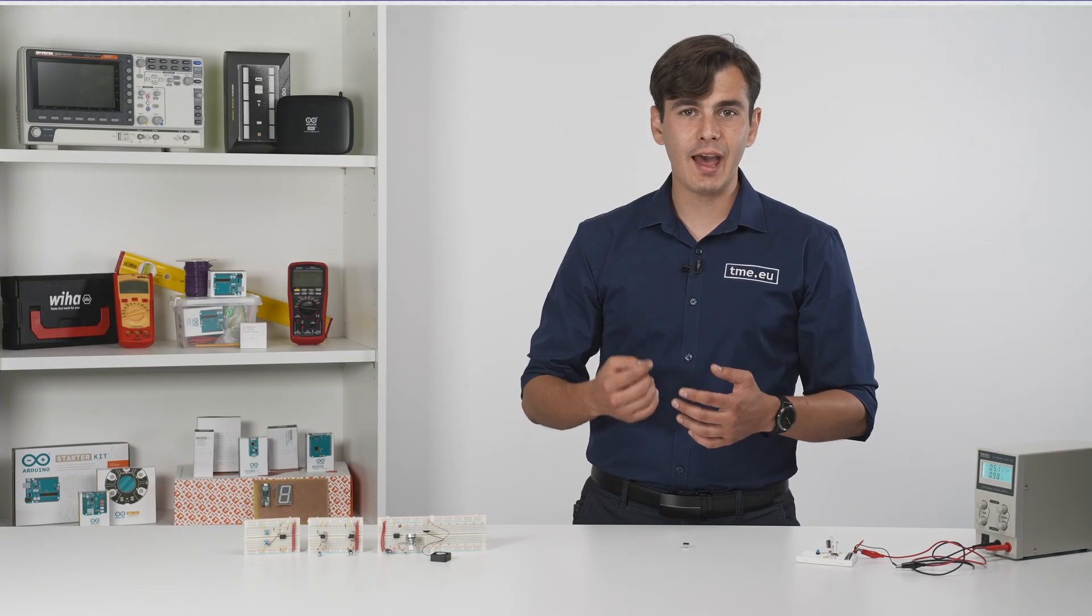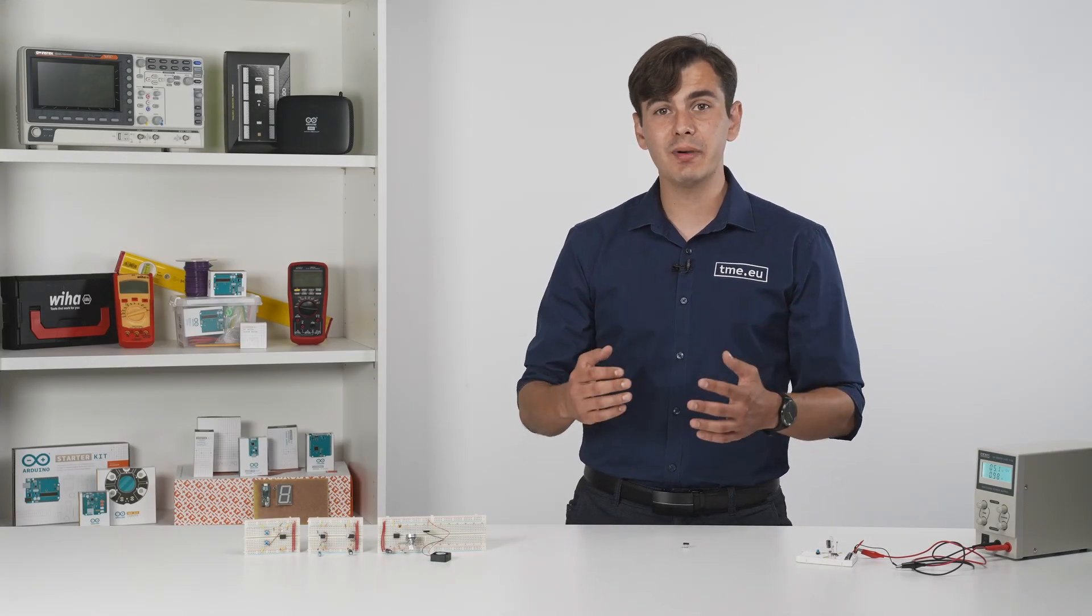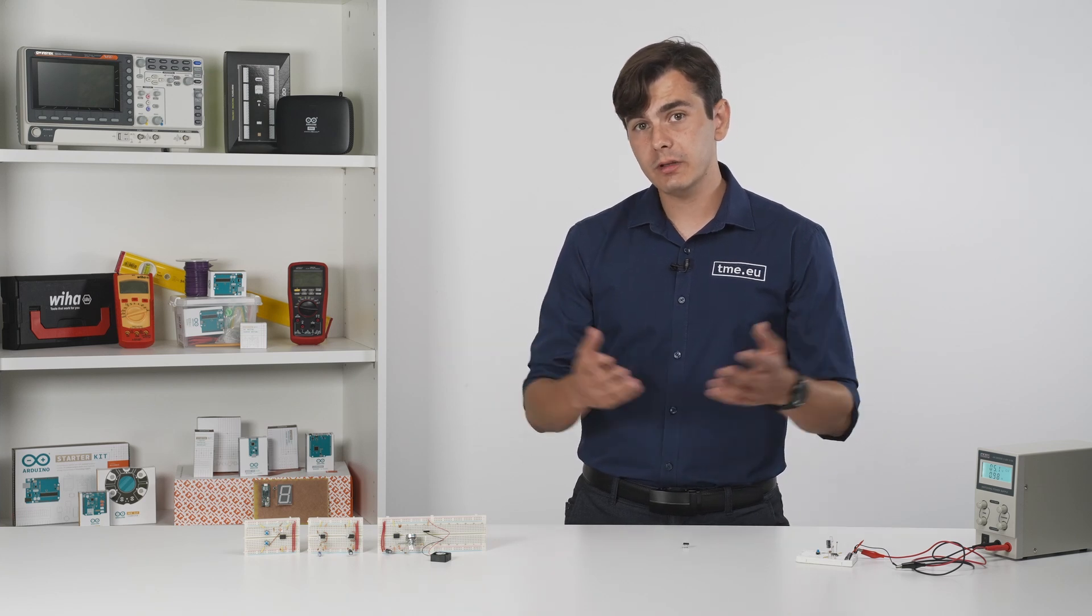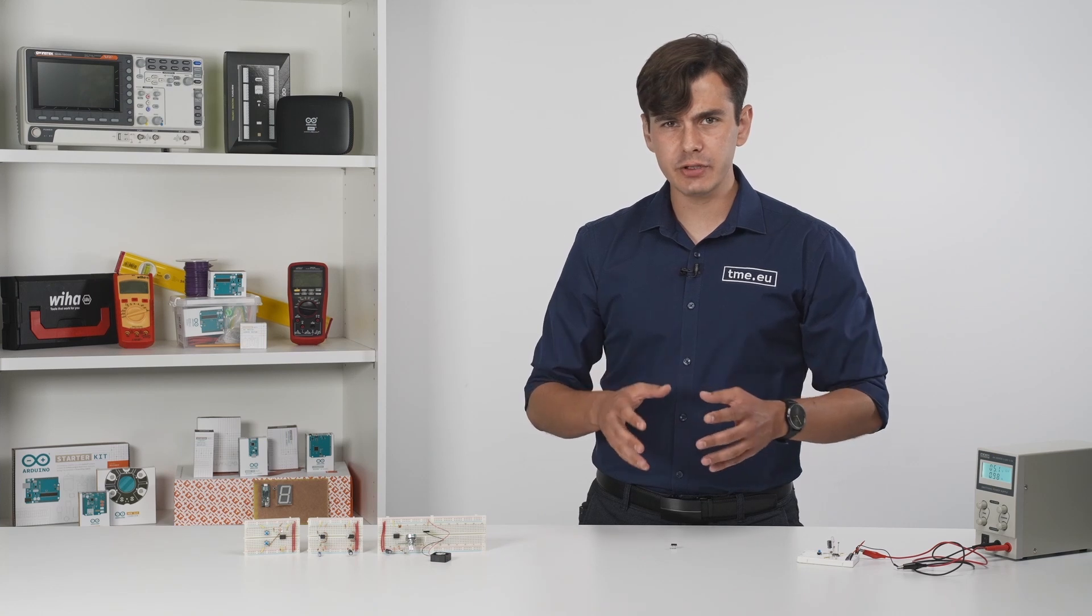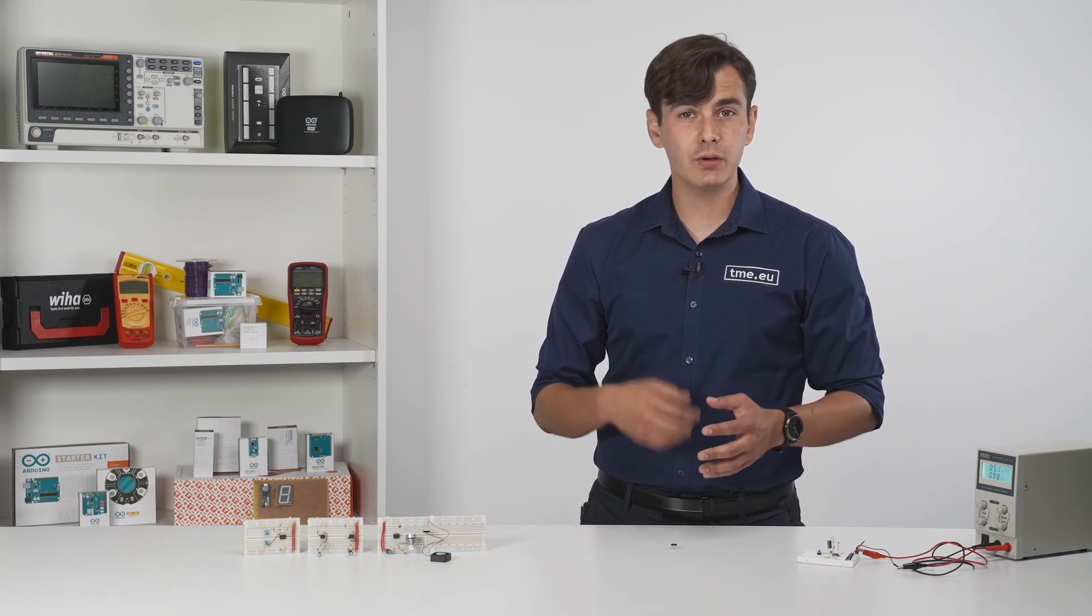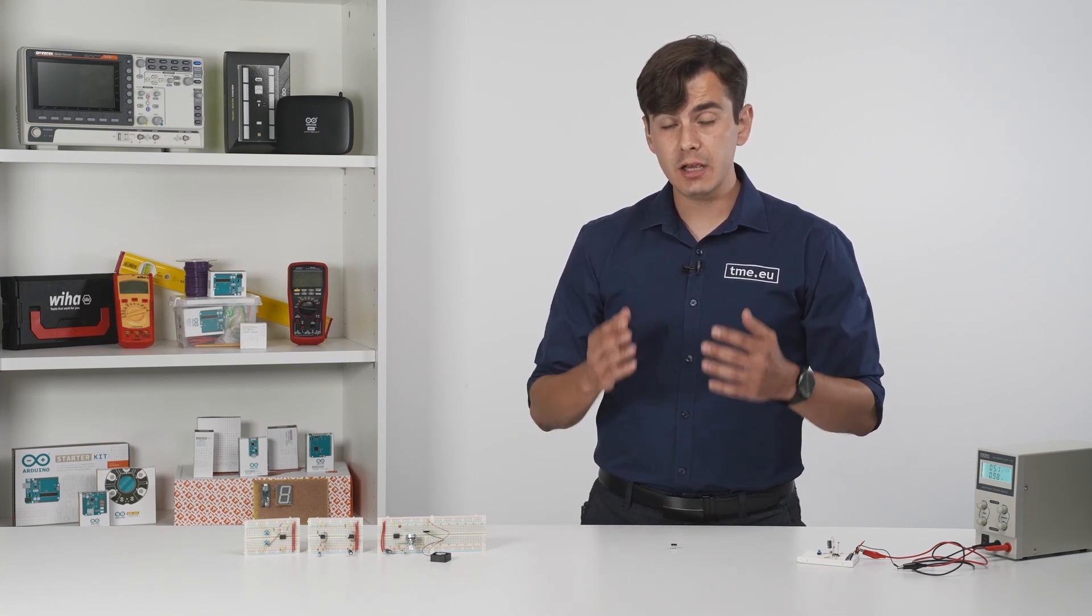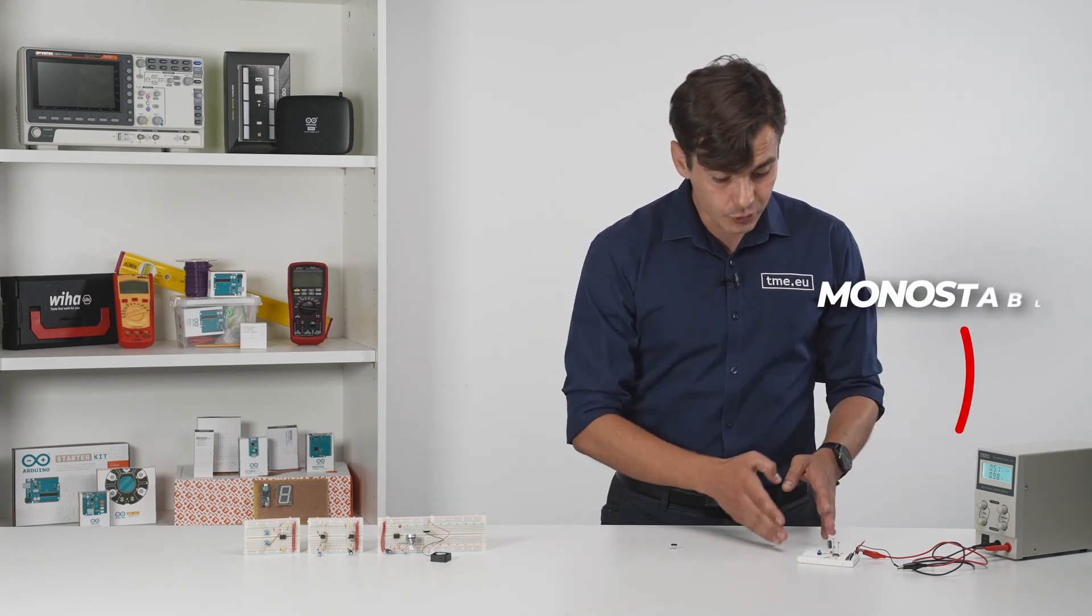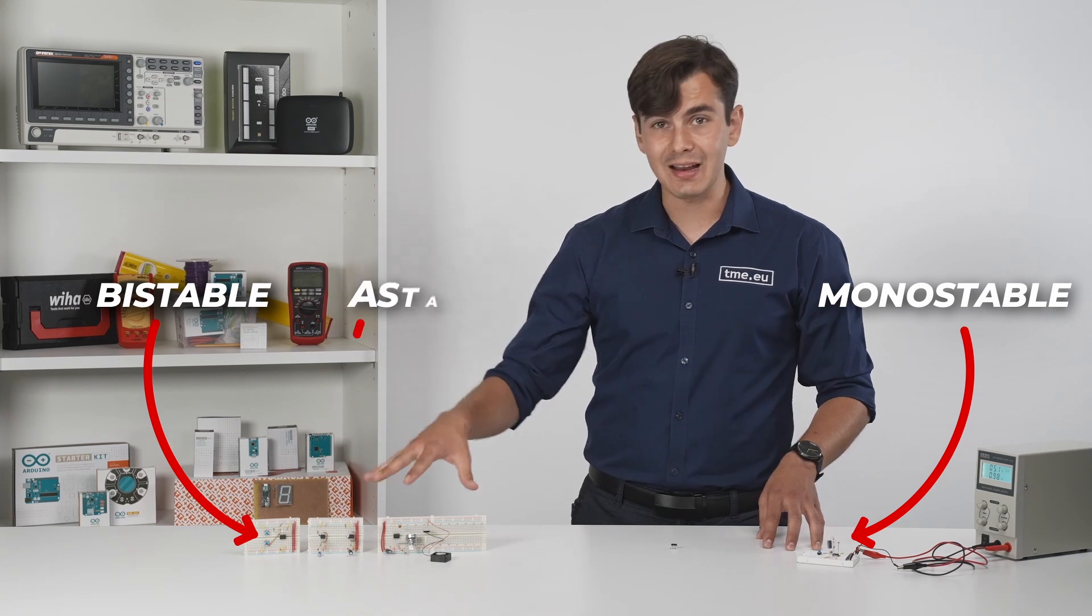It either connects the discharge pin to the ground or disconnects it. It can be very useful when you are discharging the timing capacitor in the monostable mode. Also, if you don't need it, it can be left disconnected. Now, this chip has many features and it is very adaptable because of its three modes. Each one of them unlocks hidden features and those are monostable, bistable, and astable.